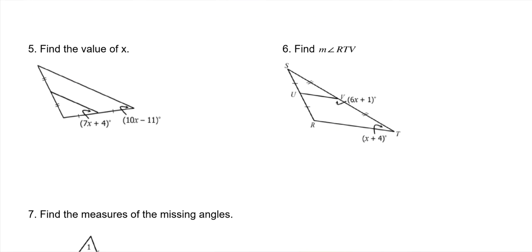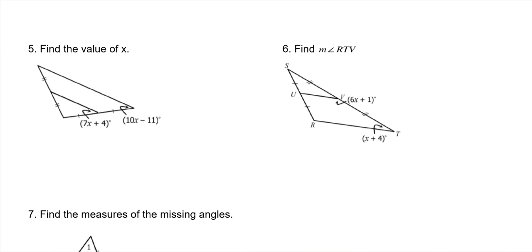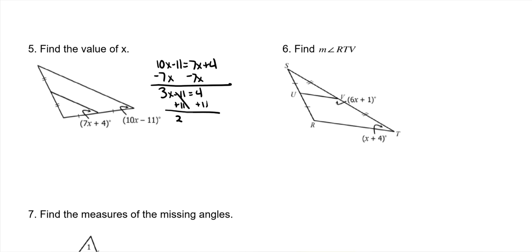Find the value of X. These angles are formed by parallel lines cut by a transversal, so they are corresponding angles, which means they are congruent. Set them equal to each other: subtract 7X from both sides, giving 3X minus 11 equals 4. Add 11 to both sides: 3X equals 15. Divide by 3, and X is 5.